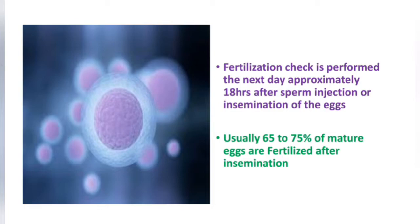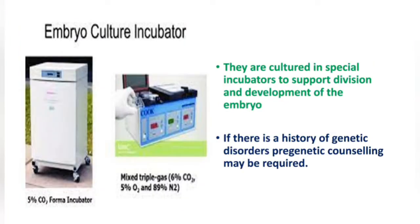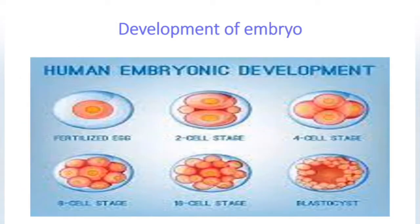The embryos are cultured in special incubators — artificial wombs — to support the division and development of the egg. If there is a history of genetic disorders, pre-genetic counseling may be required. The development of the embryo takes place from the fertilized egg through two-cell, four-cell, eight-cell, and 16-cell stages, until it becomes a blastocyst.